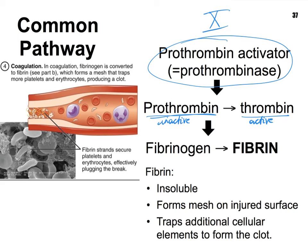Thrombin already tells you what it's doing — thrombin, as in the word thrombosis or thrombus. Thrombosis is the condition where a person has developed a thrombus, that is a clot in their blood. Once we have thrombin, it can catalyze the conversion of inactive fibrinogen to fibrin. Fibrin is the protein that forms the little strands during a clot. This is the point when blood proves it is indeed a connective tissue — it can produce fibers. Fibrin is an insoluble protein that allows it to form a clot, and once these fibers are laid down, they create a mesh in which all kinds of formed elements can get trapped.